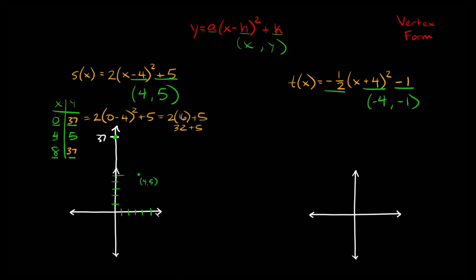So we have points at 0 comma 37 and 8 comma 37, which are both much higher than the vertex at 4 comma 5. We can extend the graph, plot those points, and connect the dots. The main thing to take away is how to find the vertex in vertex form, since that's the most important step when graphing.